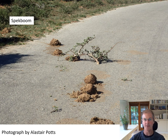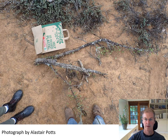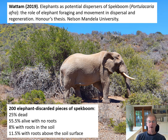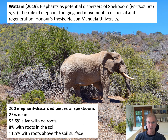Elephants are messy eaters when it comes to Speckboom — they usually leave behind broken pieces. Despite being left on the soil surface, the roots manage to find their way into the soil. A recent honours study by Lara Wattam at Nelson Mandela University, supervised by Alistair Potts and Graham Kerley, found that of 200 pieces of Speckboom discarded by elephants in Kwandwe Game Reserve, approximately 20% rooted. Perhaps this messy eating is not an accident — perhaps a mutualism of sorts has evolved over millions of years.